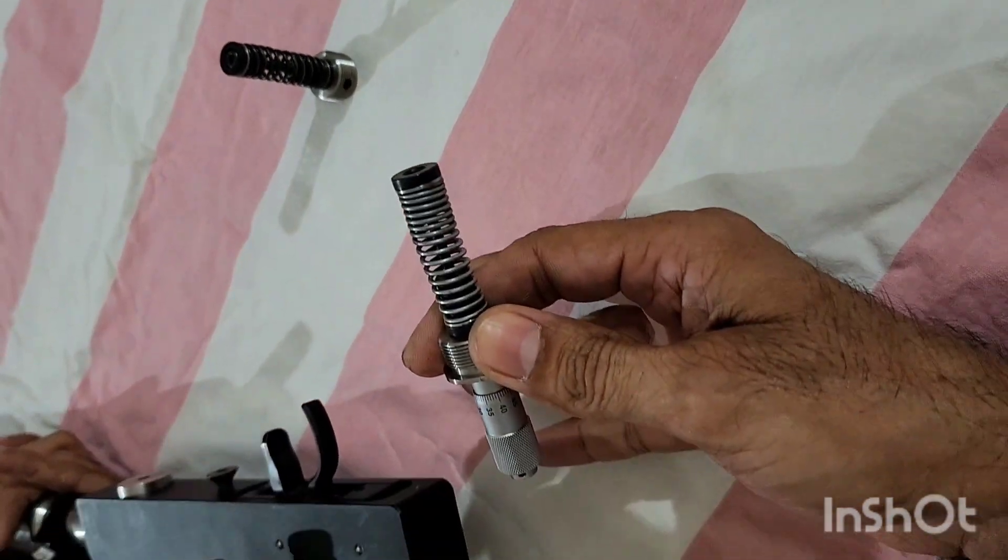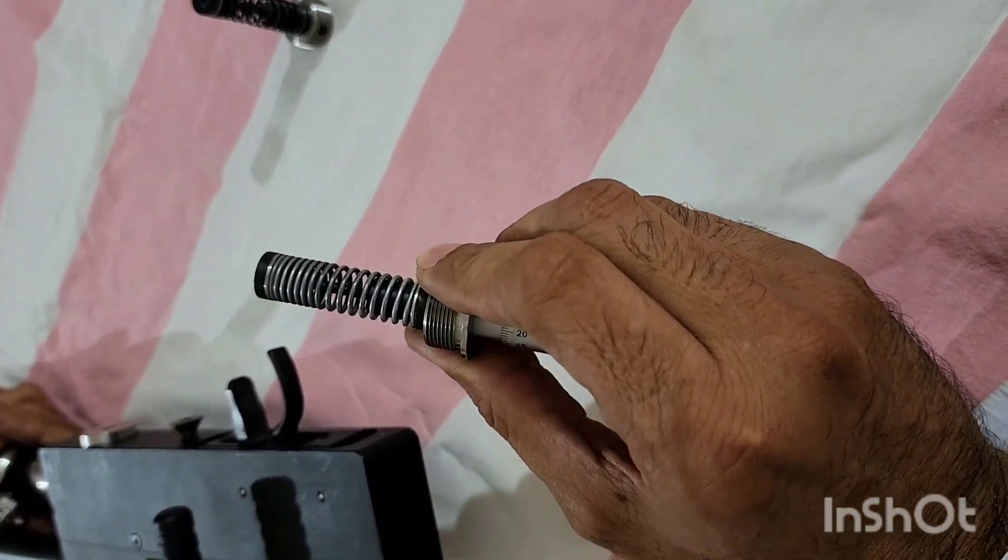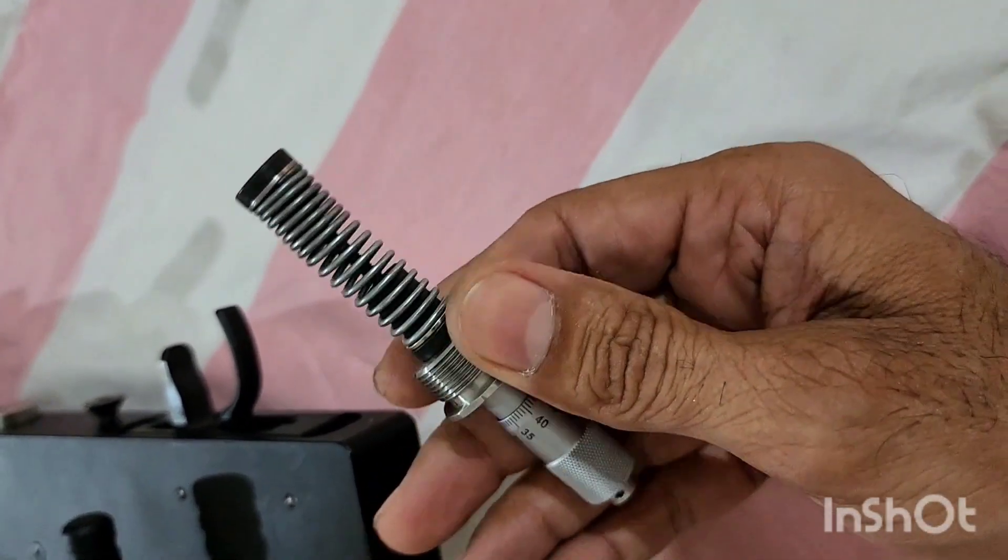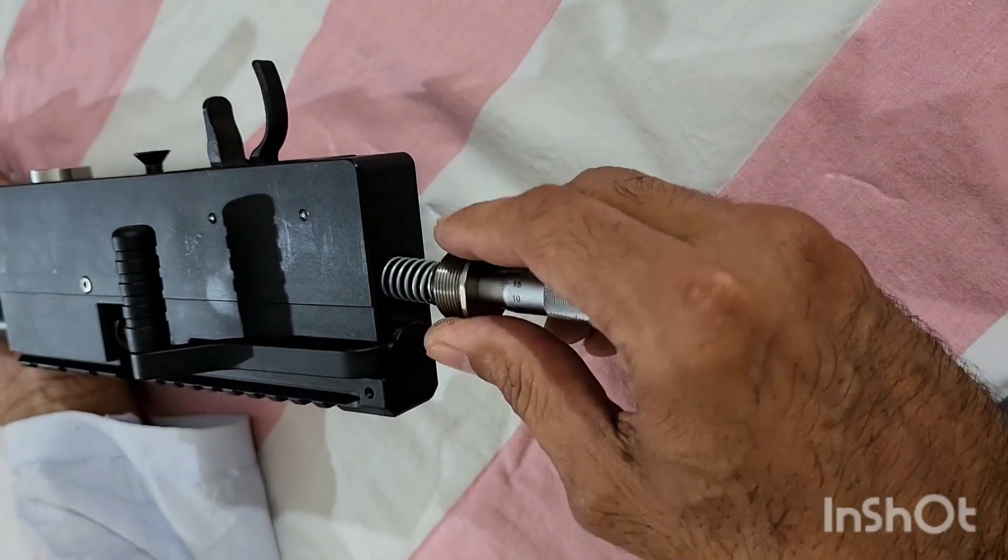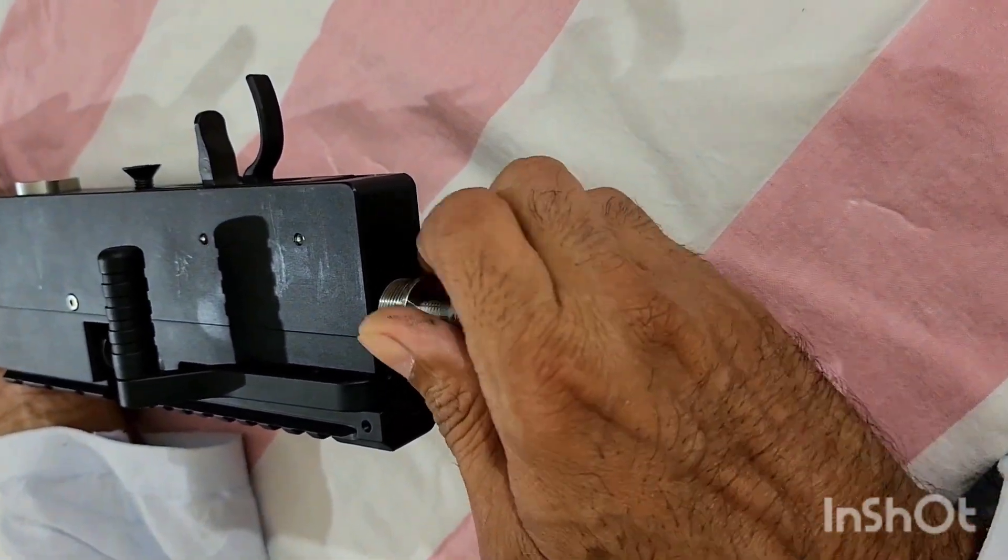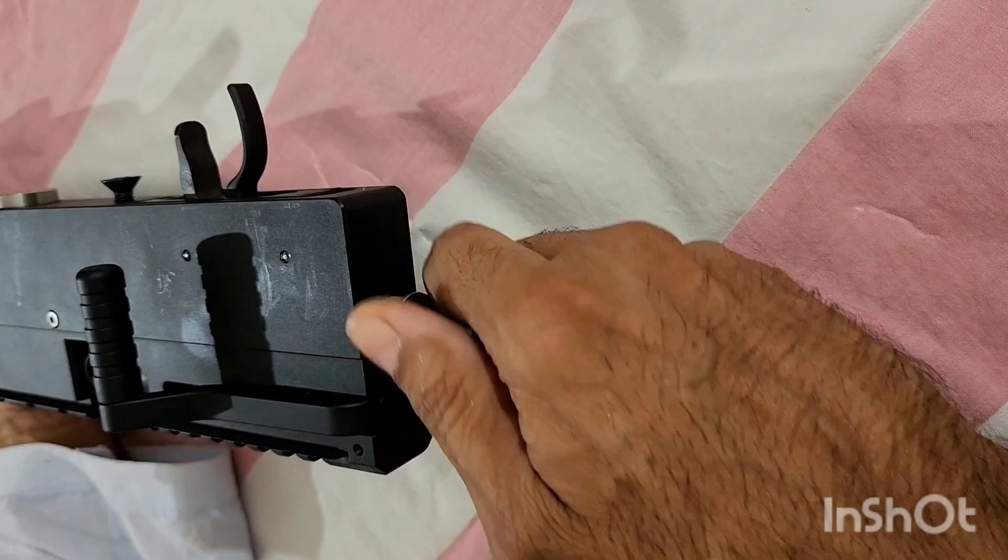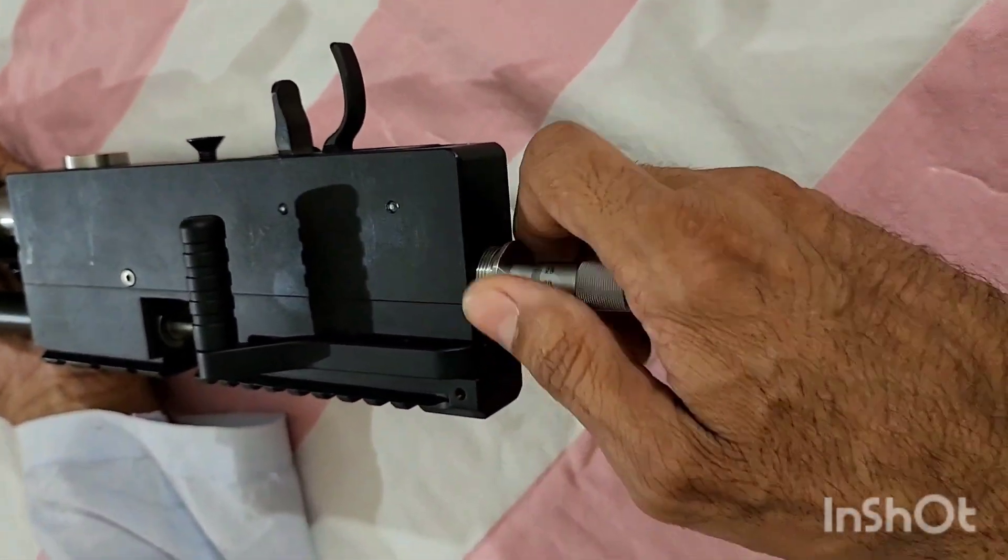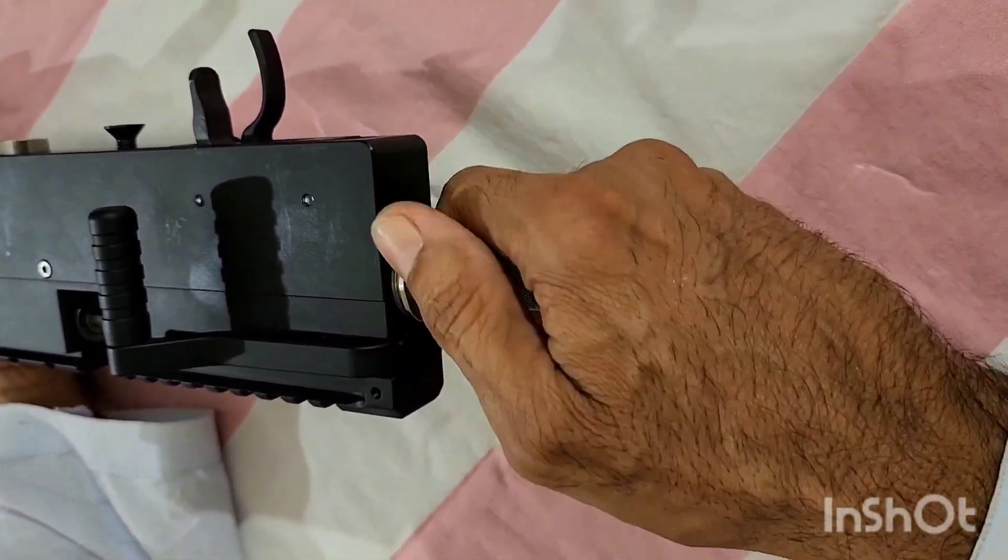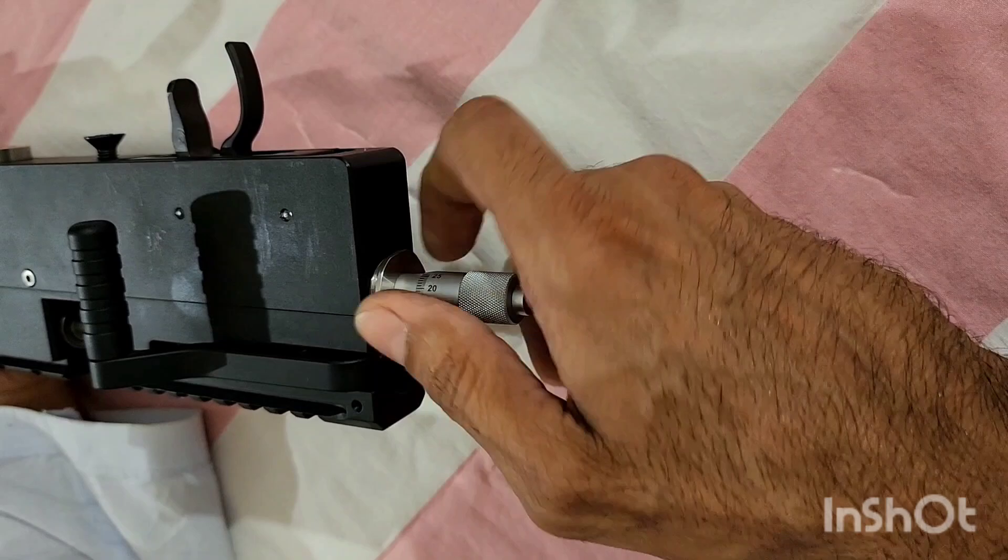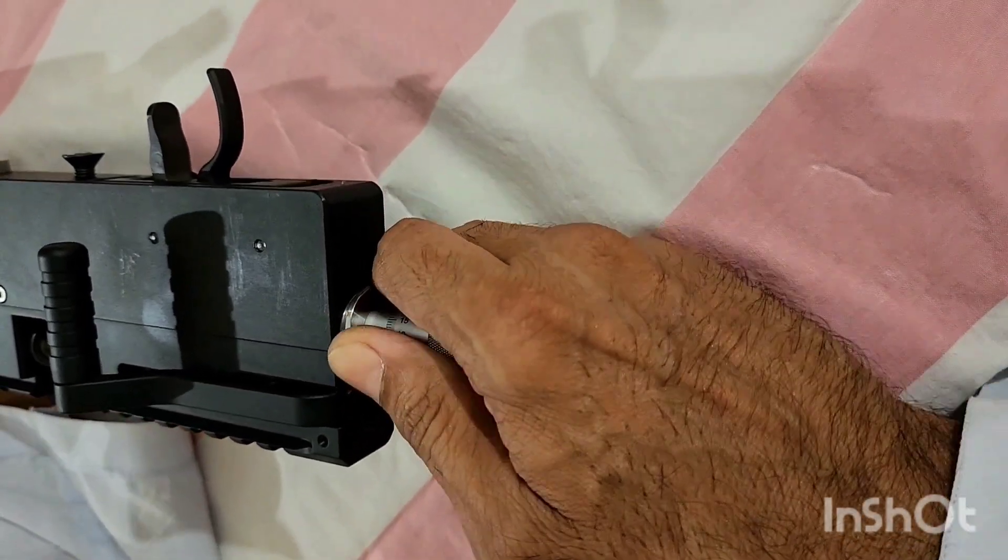This is the micro adjuster that I have made with similar anti-hammer bounce device. We can simply insert it and with same threads, I can tighten it here like this.